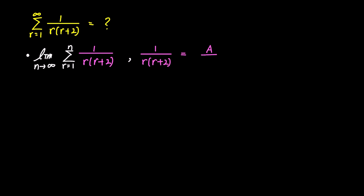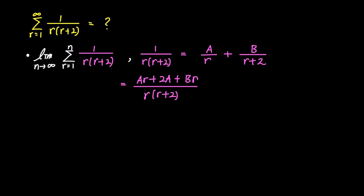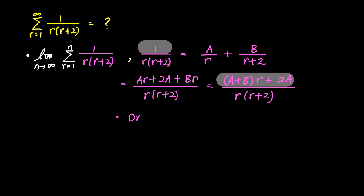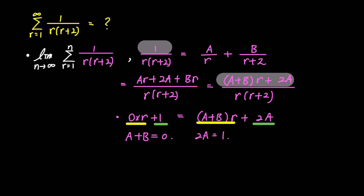To determine the values of the constants a and b, we'll combine the two fractions on the right back into one and compare coefficients. The numerator becomes ar plus 2a plus br, and the denominator is r times r plus 2. Expressing the numerator as a function of r gives a plus b times r plus 2a, and this should equal 1. Writing 1 as 0 times r plus 1, comparing coefficients reveals a plus b equals 0 and 2a equals 1, leading to a equals 1 over 2 and b equals negative 1 over 2.